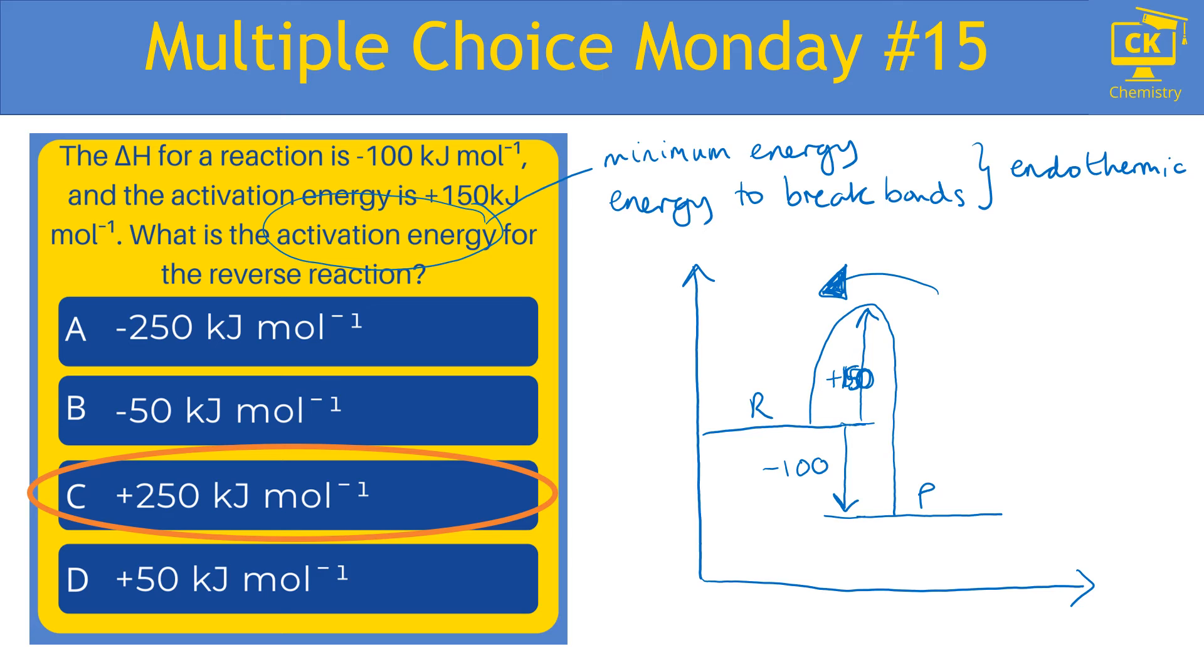The bonds broken will be the same as the bonds that were made in the forward reaction. And so the activation energy from P to R is from this level to this level. And you should be able to see that the value of that is 250 kilojoules per mole and that it is going to be a positive value because you are going up. Activation energy is always an endothermic change.